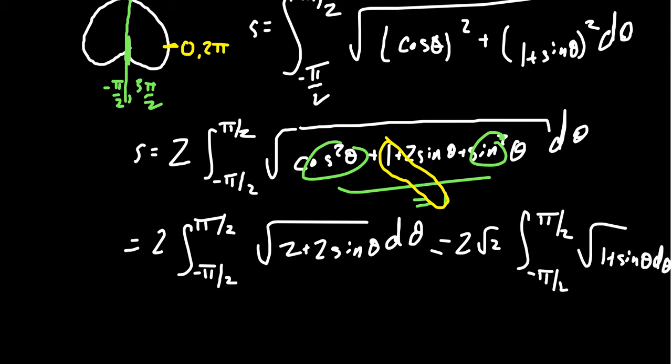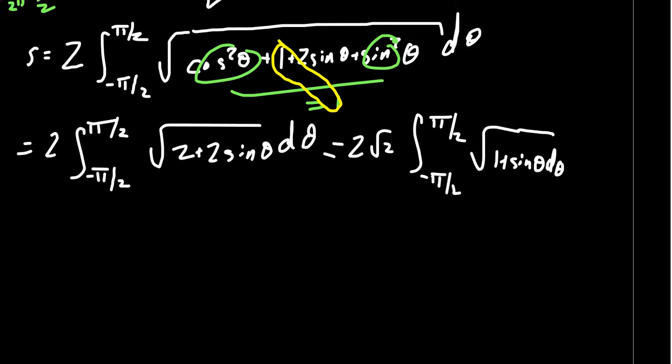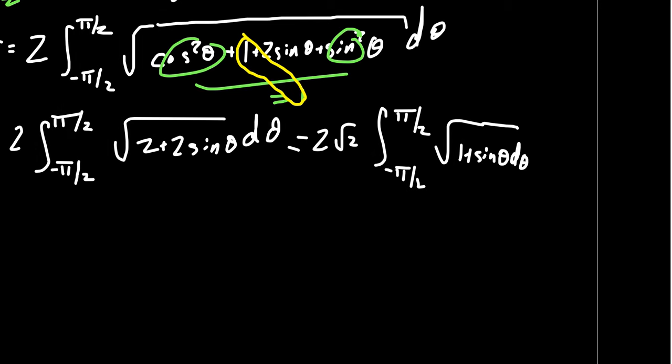We can factor out the 2 that's inside the radical, giving 2 times the square root of 2, times the integral from negative pi halves to pi halves of the square root of 1 plus sine theta, d theta. This kicks the can down the road a bit — we still have to deal with this square root of 1 plus sine theta.